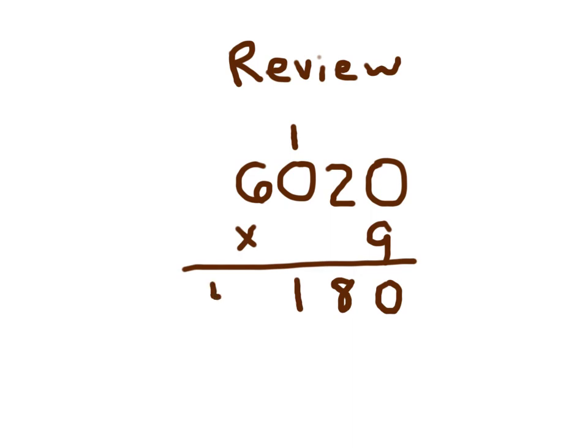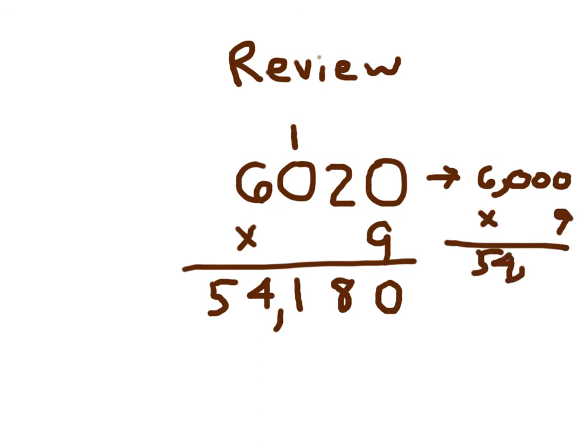And finally, 9 times 6, which is 54. Always do remember to place that comma as well. And you can always think whether or not it's reasonable. If we were to estimate this product, 6,000 times 9 is 54,000.